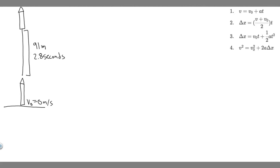In this problem, we're told a rocket blasts off and moves straight upward from the launch pad with constant acceleration. After 2.8 seconds, the rocket is at a height of 91 meters. What are the magnitude and direction of the rocket's acceleration? And B, what is its speed at this time?